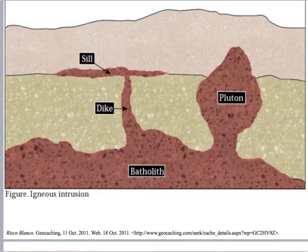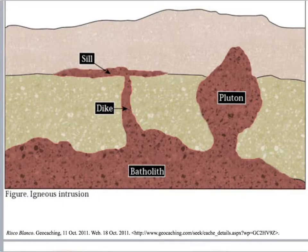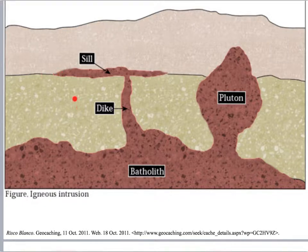Two more features are called sills and dikes. Dikes are intrusive features that are going to cut across rock layers — you can see it interrupting what we'll call sandstone. A sill will be horizontal, just like a window sill is horizontal. You find a sill in between two rock layers, so it's on top of the sandstone but below the limestone.